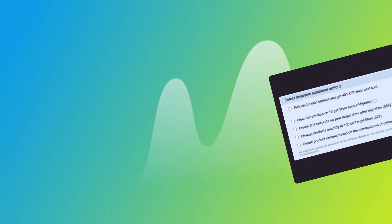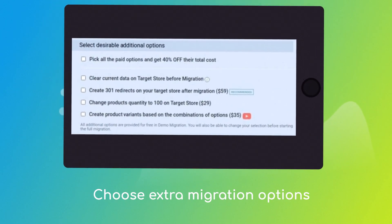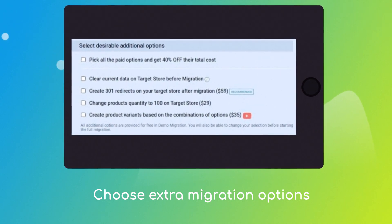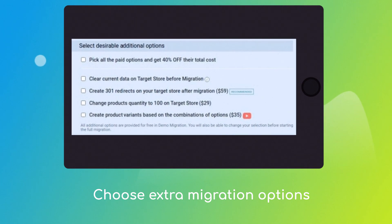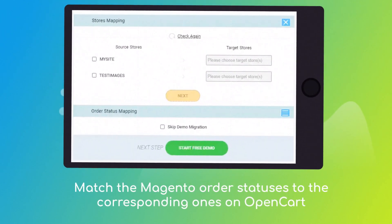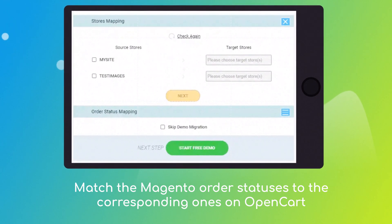Choose the additional options, like 301 redirects on the target store, migrate images from the descriptions, or preserve order IDs, etc. Then click the hamburger button to match your Magento multiple stores, customer groups, and order statuses to the OpenCart ones.